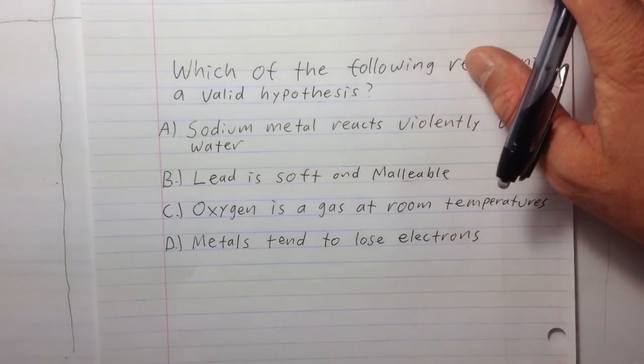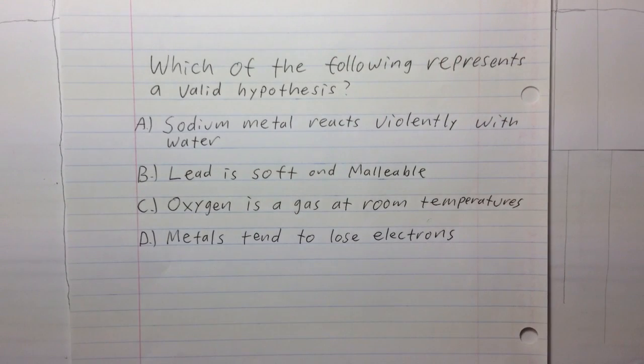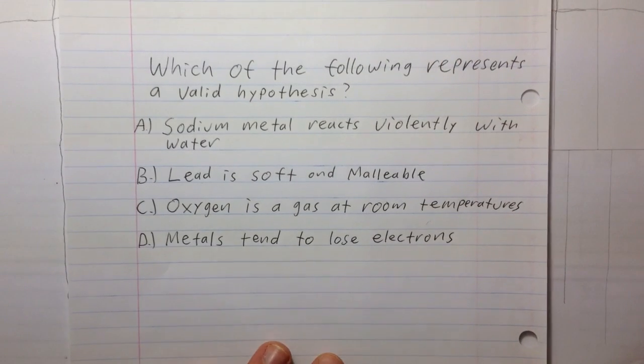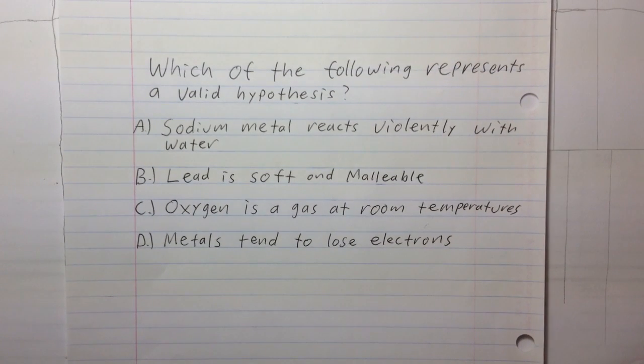In the last example, this is straight off of a test that you would most likely have to take, which of the following represents a valid hypothesis. Sodium metal reacts violently with water, lead is soft and malleable, oxygen is a gas at room temperature, and metals tend to lose electrons.